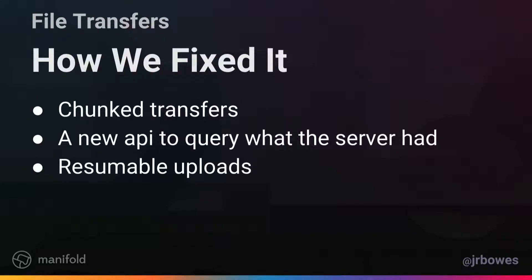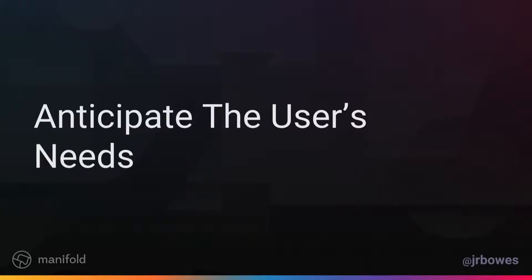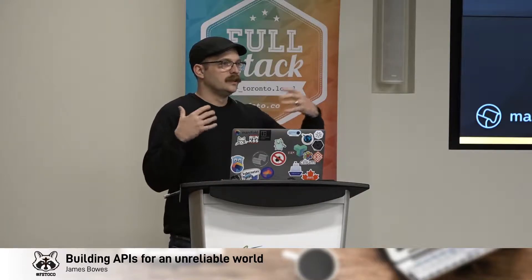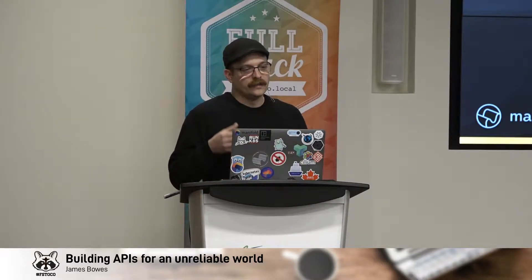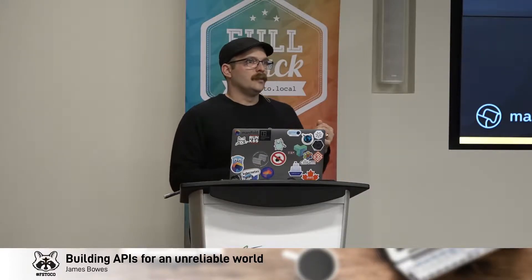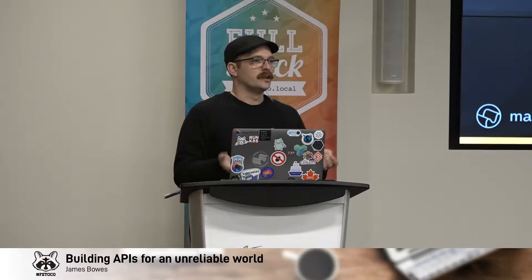How we fixed it is with chunk transfers. Instead of trying to send everything at once, we sent little pre-sized pieces up at once and added an API for the client to ask the server what it already had so that we could resume these uploads — pretty simple solution. Had we been developing with the needs of the user in mind to start with, we would have begun this way. So the lesson here is to anticipate your user's needs — what they're actually going to do and how this interacts with the rest of the world. We can't rely on the user to do the same thing we do, and we can't rely on the network they're using to be the same as the one we're developing with.